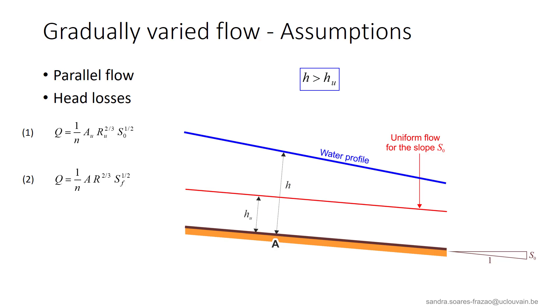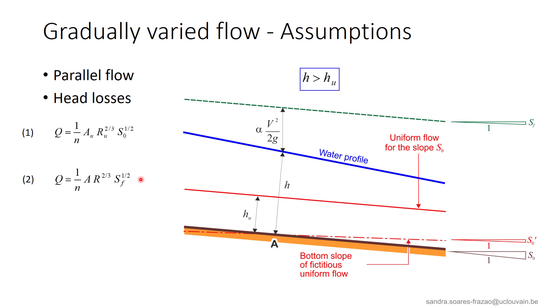we can calculate the head losses per unit length SF using equation 2. Doing this consists, in fact, in assuming that the head loss at section A are equal to the head losses that would be observed for a uniform flow with a depth equal to H. The corresponding energy grade line is the green line SF parallel to a fictitious bed slope S0 prime and corresponding to a fictitious uniform flow depth H.